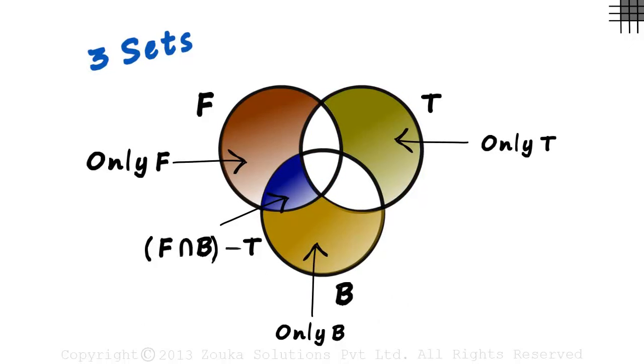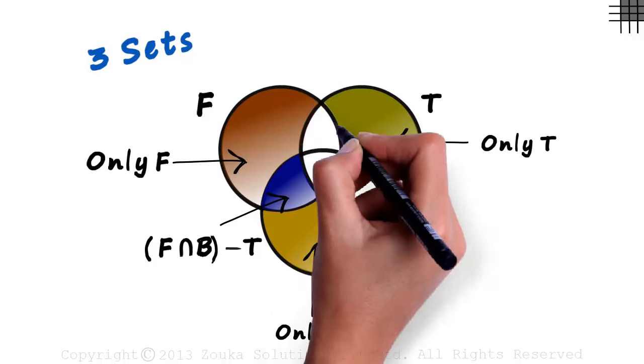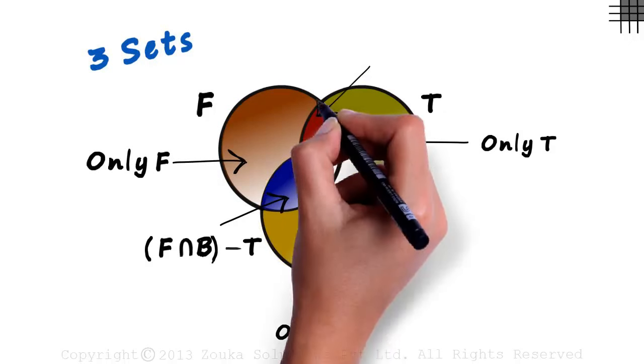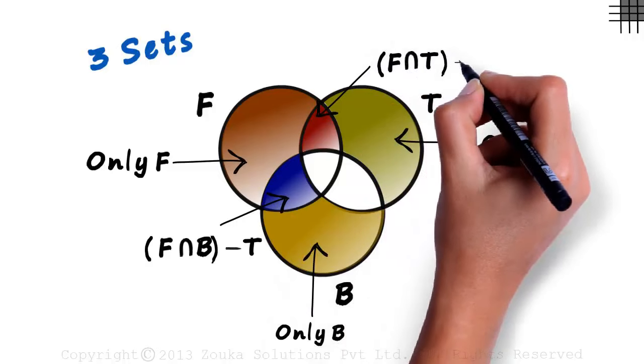You should probably get the next ones correct. This region includes students coming to football and tennis but excludes basketball. So it will be F intersection T minus B.